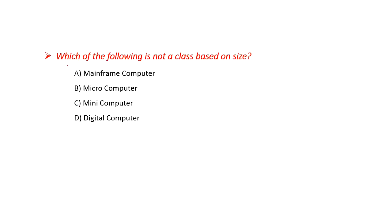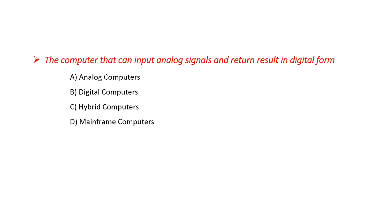Which of the following is not a class based on size? Option A: Mainframe Computer, B: Microcomputers, C: Mini Computer, D: Digital Computer. The answer is D: Digital Computer. The computer that can input Analog signals and return results in digital form is — Option A: Analog, B: Digital, C: Hybrid, D: Mainframe Computers. We discussed that Hybrid Computers process both Analog and Digital signals. The answer is C: Hybrid.